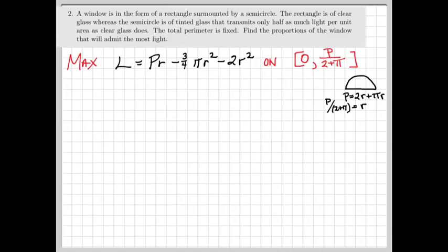Let's take the derivative of L with respect to R to find our critical points. The derivative of P times R is just going to be P because P is a constant. The derivative of -3/4 πR² will give us -3/2 πR. And the derivative of -2R² gives us -4R.